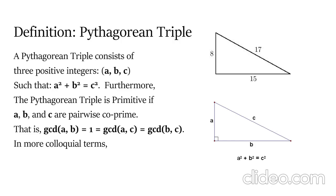In more colloquial terms, Pythagorean triples are the side lengths of a right triangle.